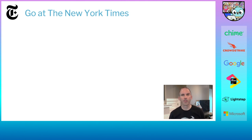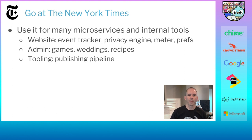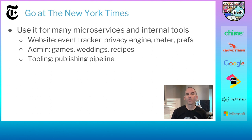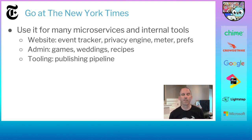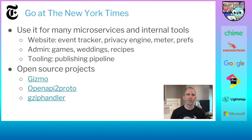We do use Go at the New York Times for several things. Any visit you make to our website or mobile app will hit a number of services, including our event tracker, how we do privacy, our paywall meter, and our preferences. We also use it for admin tools like the back end to the crossword puzzles or our weddings and recipe functionality. On my team itself, we use it for a lot of our tooling. We also have some open source projects — one of them is called Gizmo, a framework for building web applications and APIs in Go.